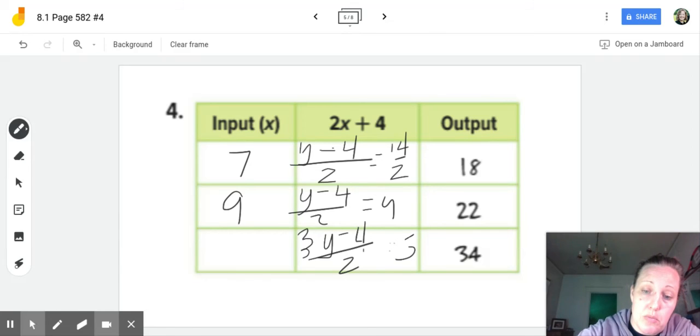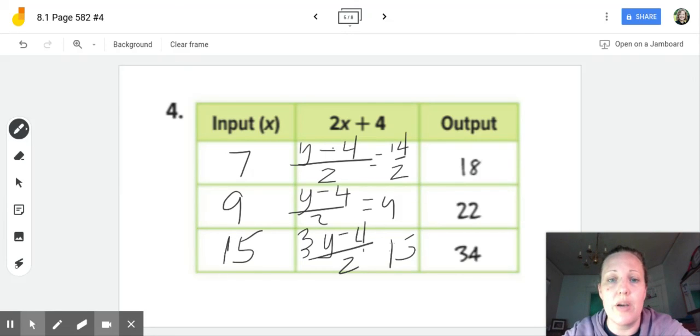So my input here is 15. So hopefully those inverse operations and working backwards is helpful to you, and again, you can always plug them back in to check it. 15 times two is 30, plus four is 34. 9 times two is 18, plus four is 22. Hopefully that helps you make some sense of that working backwards.